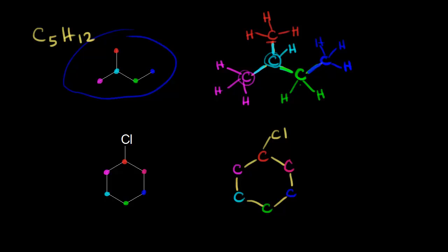Now let's think about hydrogens, starting with the carbon in red. That carbon already has three bonds — one, two, and three — so it needs one more, which is implied to be a hydrogen. Next, the carbon in magenta already has two bonds, so it needs two more — so we draw in two hydrogens. It's the same situation for all the carbons around our ring: the light blue carbon already has two bonds, so it needs two more bonds to hydrogen. So we can go around the entire ring and add in two hydrogens to all of these carbons.